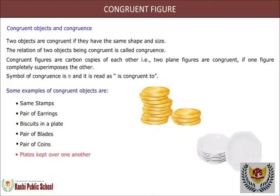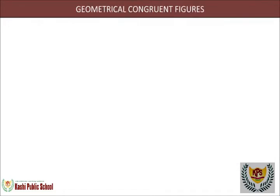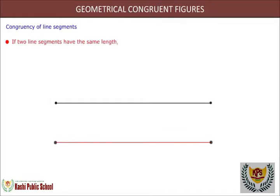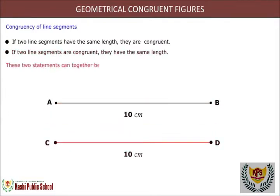Geometrical congruent figures - Congruence of line segments: If two line segments have the same length, they are congruent. If two line segments are congruent, they have the same length. These two statements can together be written as: line segments are congruent if and only if their lengths are the same.